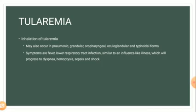Inhalation of tularemia may also occur in pneumonic, glandular, oropharyngeal, oculoglandular, and typhoidal forms. Symptoms include fever, lower respiratory tract infection similar to influenza-like illness, which can progress to dyspnea, hemoptysis, sepsis, and shock.